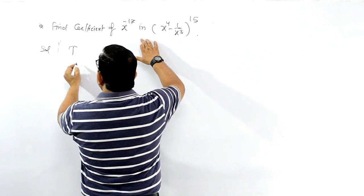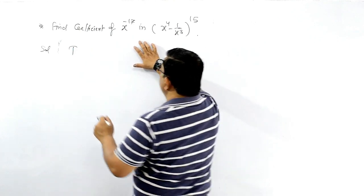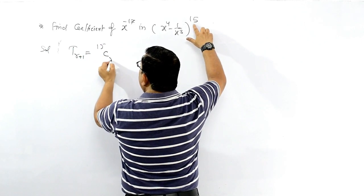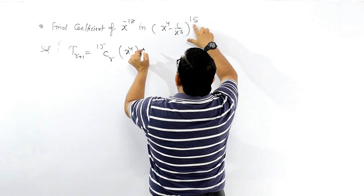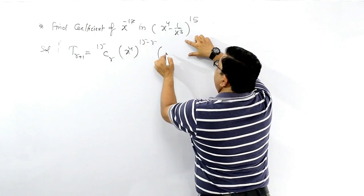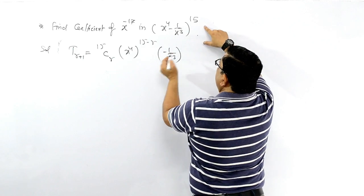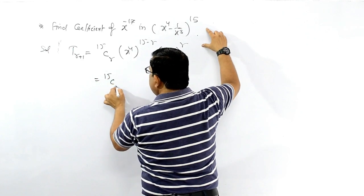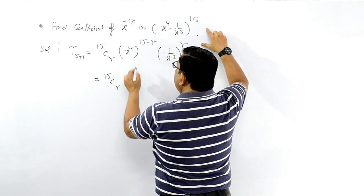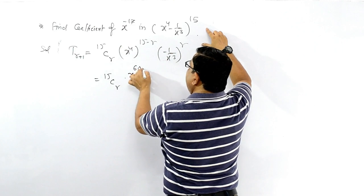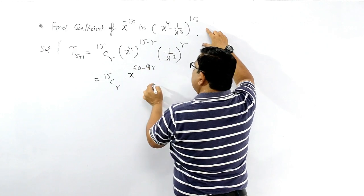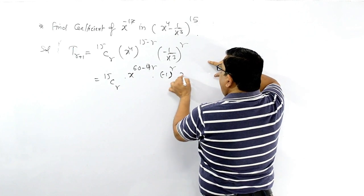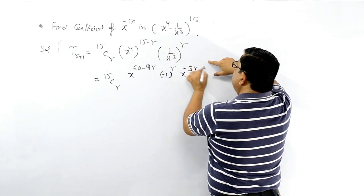T(r+1) लिखेंगे क्योंकि r नहीं मालूम है। 15Cr, x की जगह x to the power 4 है, तो (x^4)^(15-r), और y की जगह 1 upon x cube है, तो (1/x³)^r। अब solve करते हैं: 15Cr · x to the power (60 minus 4r) · (-1)^r · x to the power minus 3r।